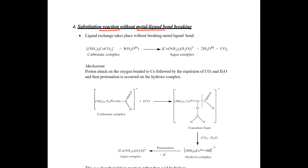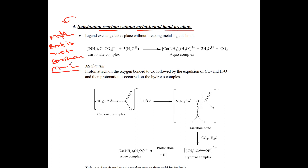Now let's discuss substitution reaction without metal-ligand bond breaking. This means that if a metal has a ligand bond, another ligand will undergo substitution, but the metal-ligand bond will not break. So ligand exchange or substitution can occur without breaking the metal-ligand bond.